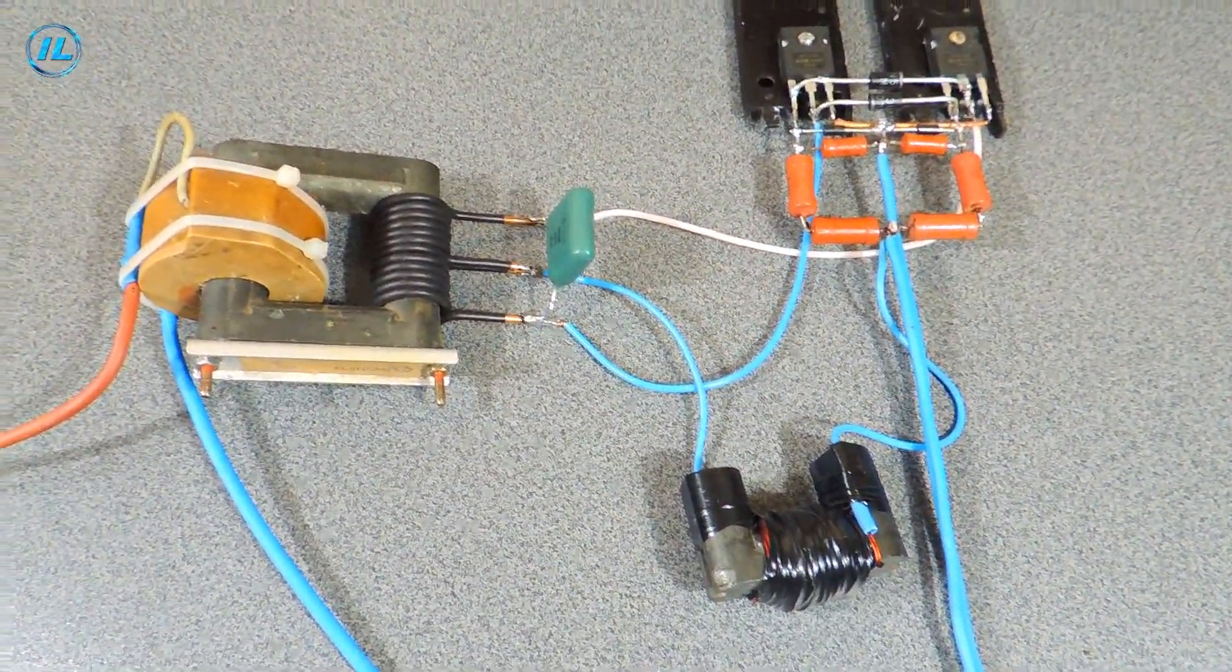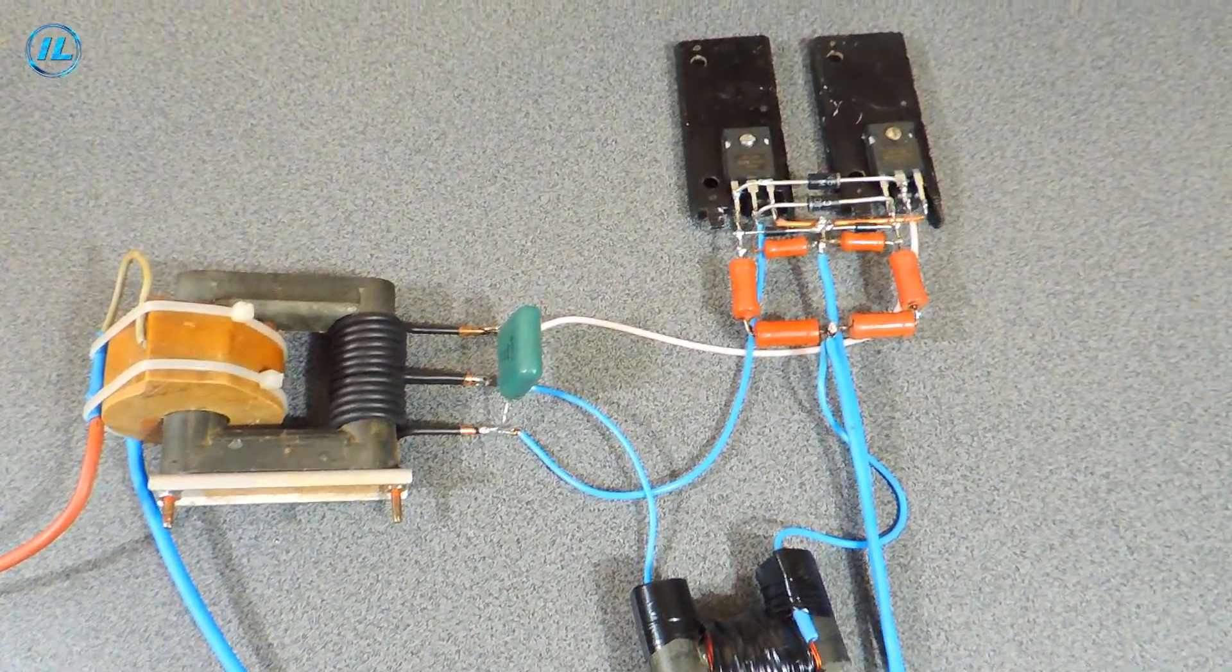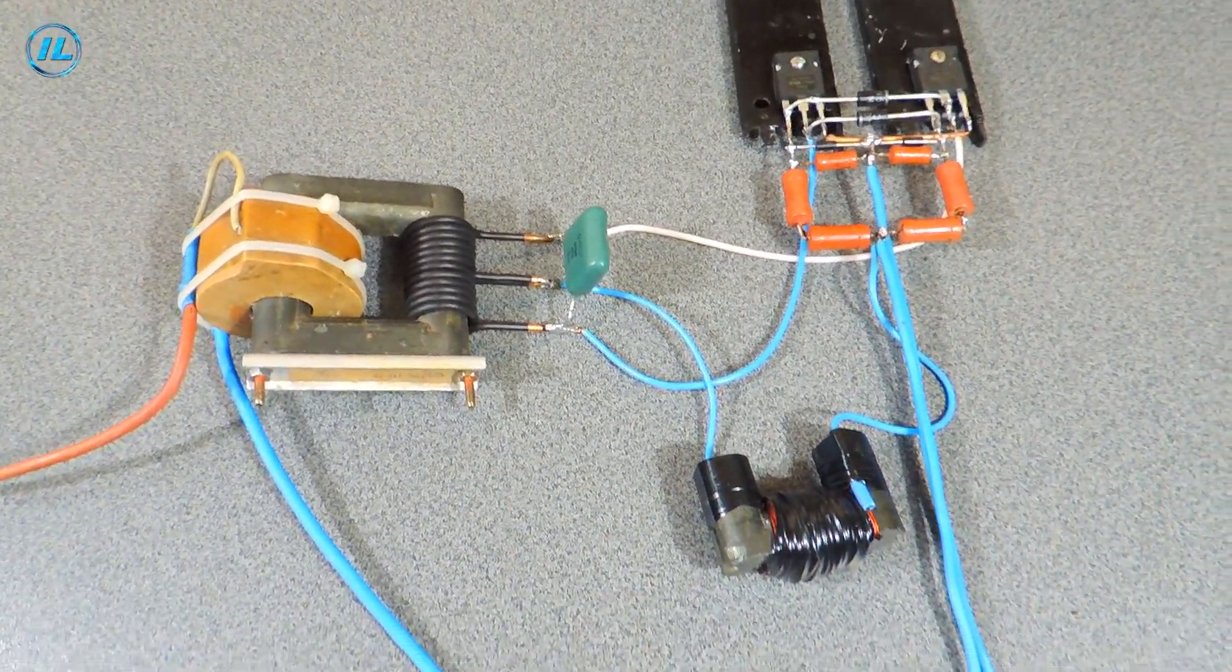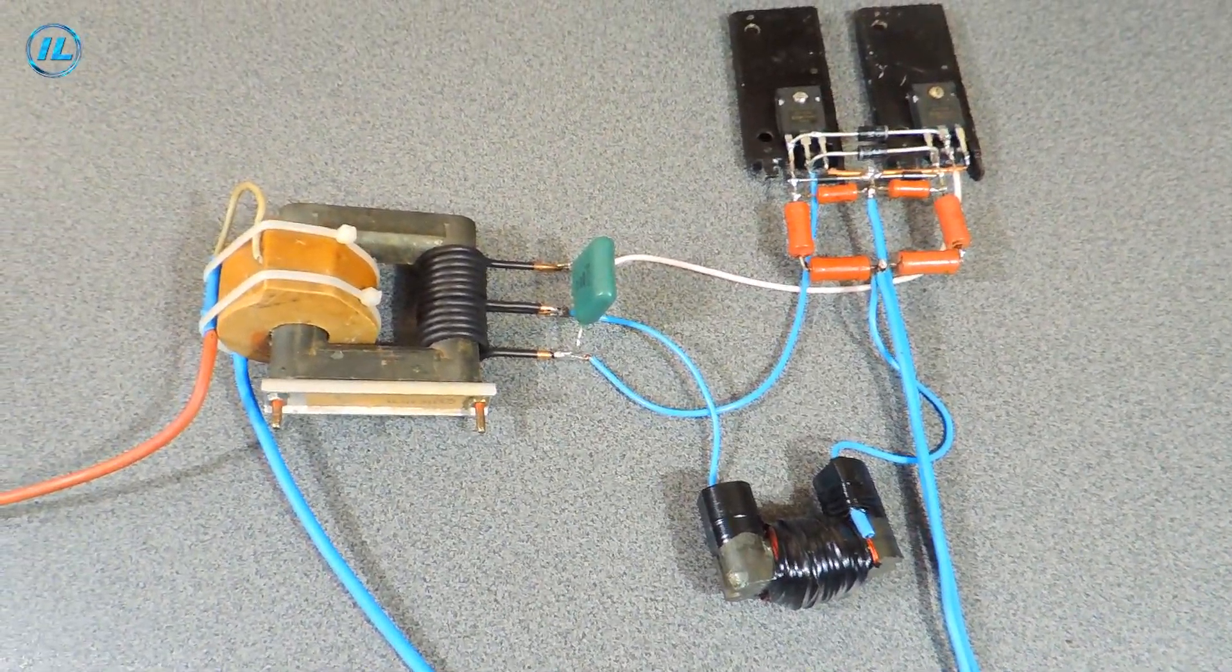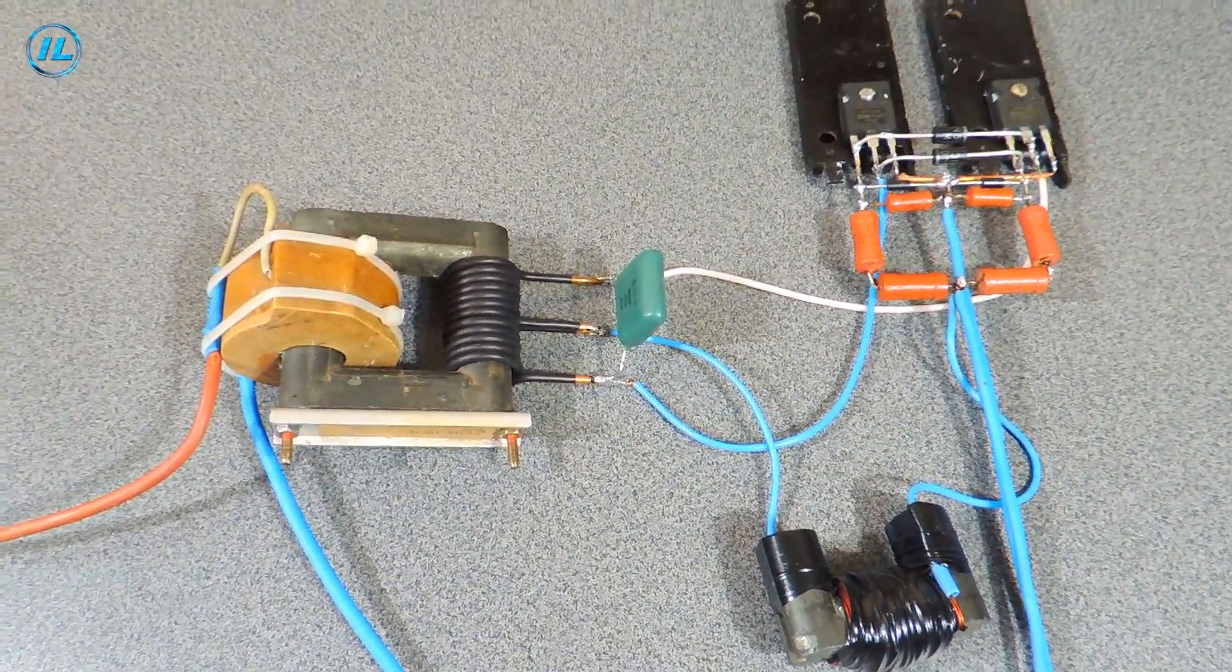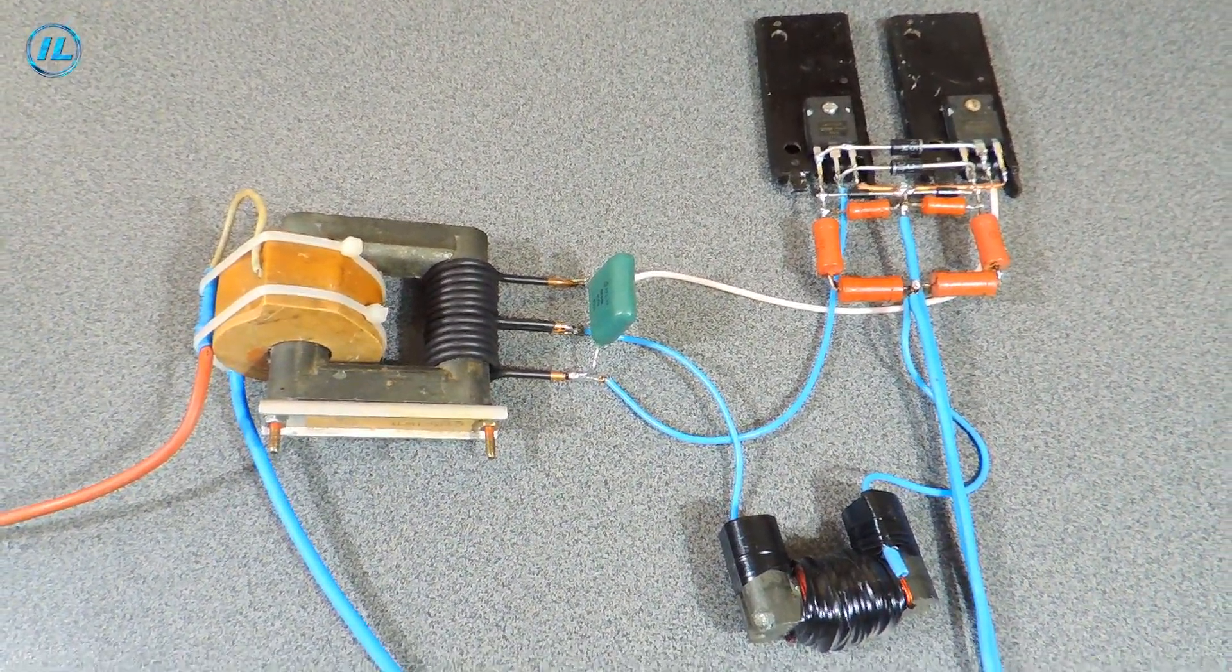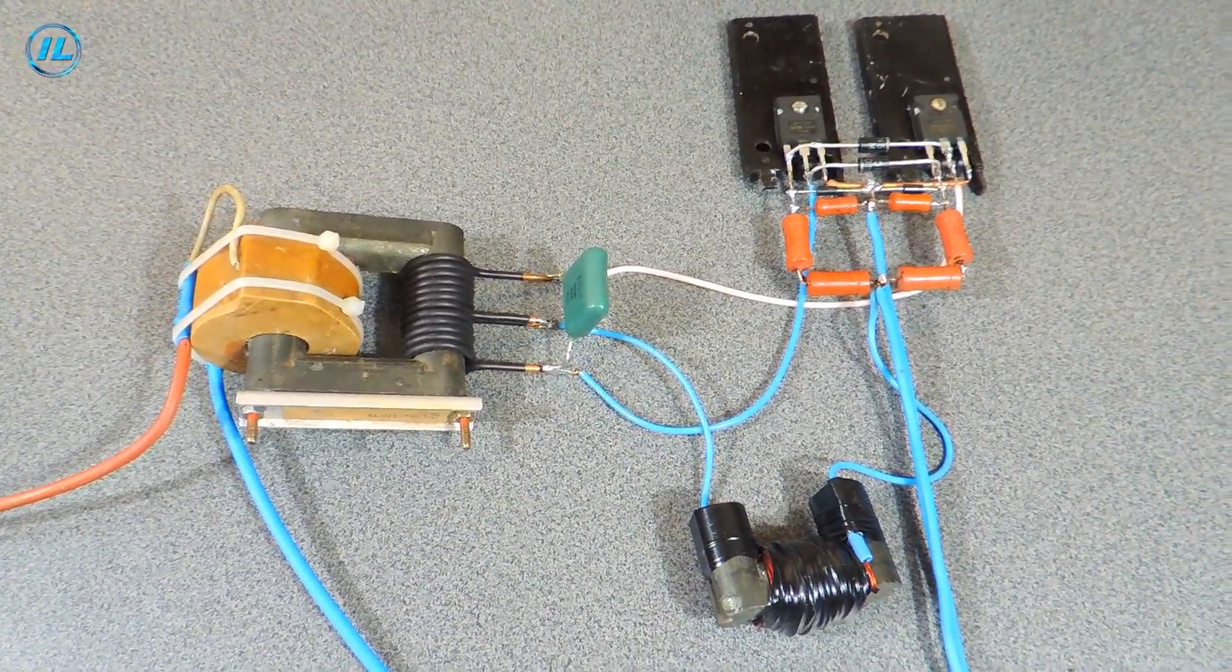So, the high voltage generator is ready. This is how it looks. Supply voltage of this generator is 36 volts. You can supply less voltage, but then the output power will be less. And now the most interesting thing, it's time to check it out.